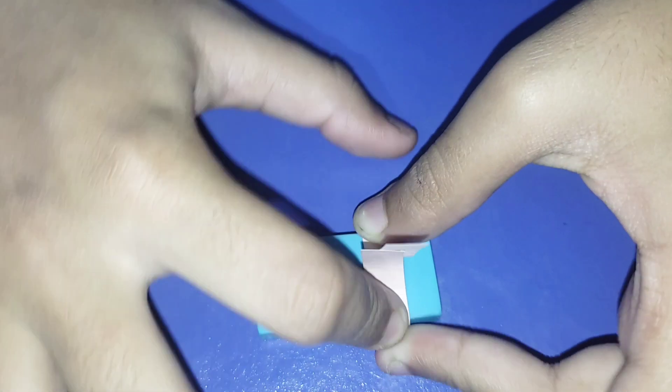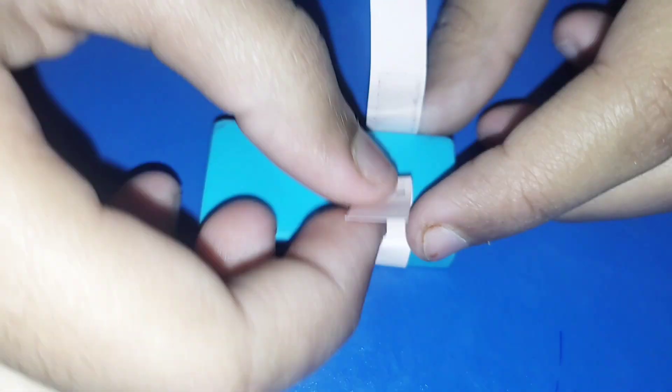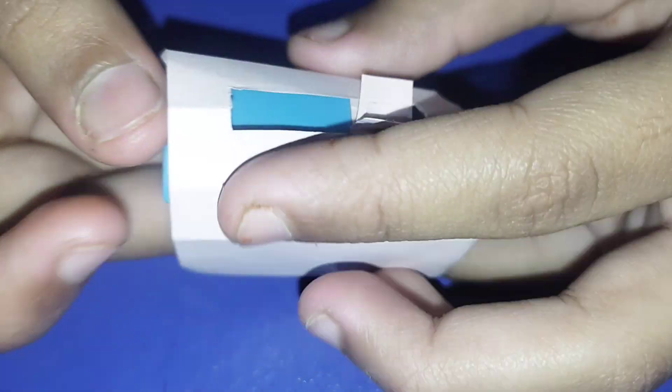Now we have to take a paper strip and paste it like this with strong glue. The sides which are slightly larger, cut it.